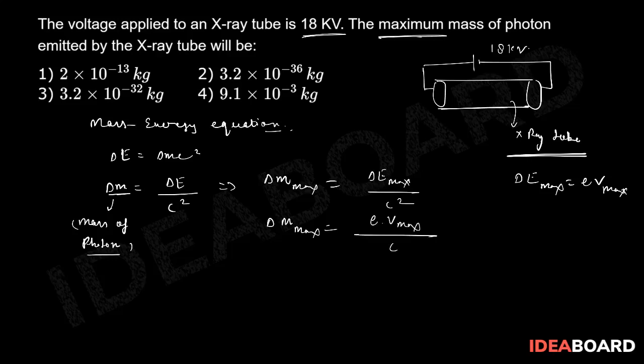If I substitute the values, Δm_max is going to be 1.6 × 10^-19 (this is the charge value e), V_max is 18 kilovolts which is 18 × 10^3 volts, divided by c squared which is (3 × 10^8)^2. Let us do the calculation.